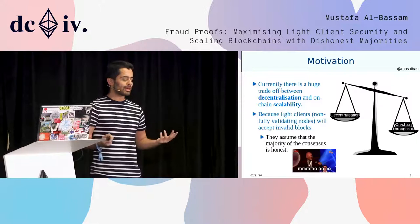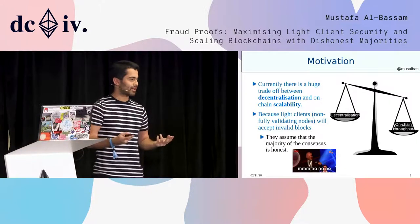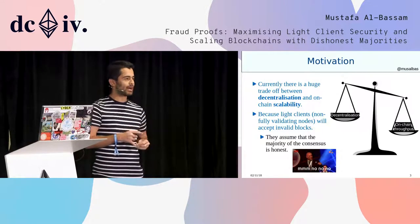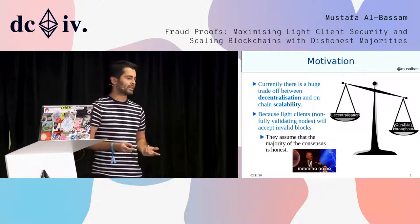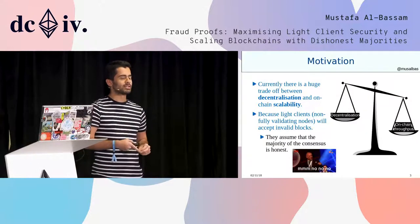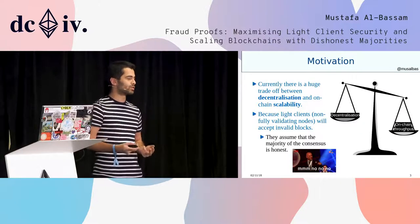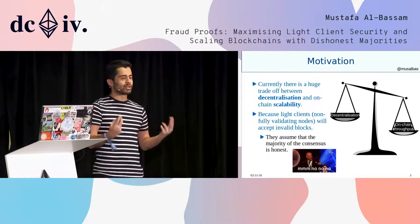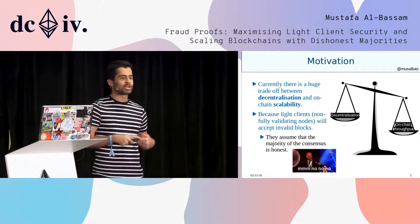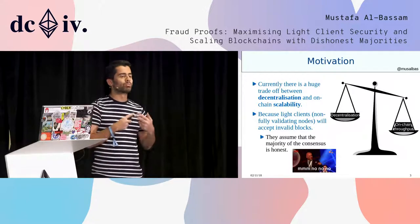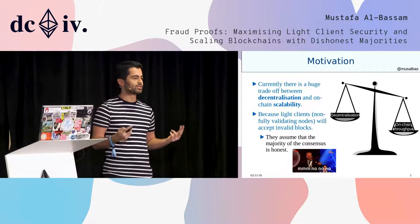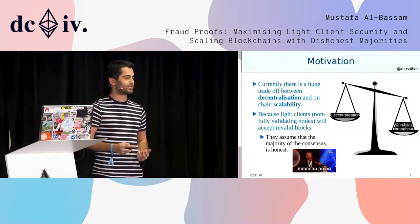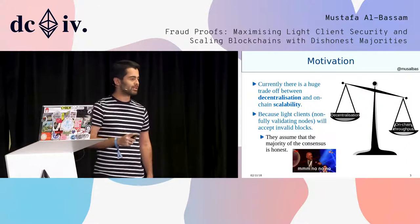The problem with light clients is that they accept blocks that are invalid. If a block contains invalid transactions, they will happily accept that block if the majority of the consensus has actually gained consensus on that block. So if there's a 51% attack, then you could trick a light client into accepting blocks that effectively generate money out of thin air, or double spend, or break the protocol rules, because they effectively assume that the majority of the consensus is honest, which is a really bad assumption that we should try to eliminate.